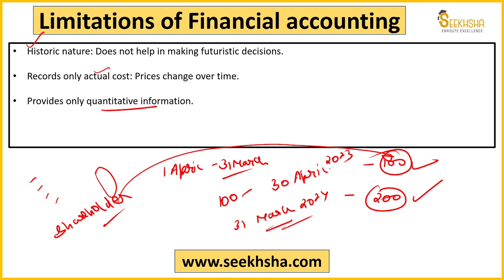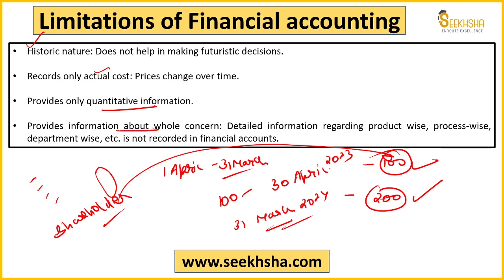Financial accounting सिर्फ quantitative information provide करता है, qualitative information नहीं। Company ने social obligation में क्या impact किया, pollution पर company का क्या impact पड़ा — वो सब इसके अंदर नहीं आएगा। Provides information about the whole concern — income and expenditure और balance sheet ये domain statements हैं, तो organization को whole view किया जाता है। लेकिन एक company के अंदर अलग-अलग products, processes और departments होते हैं — financial accounts पूरी company को एक साथ scope करता है।